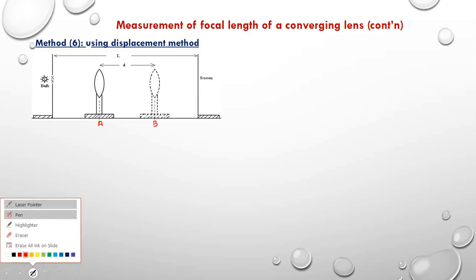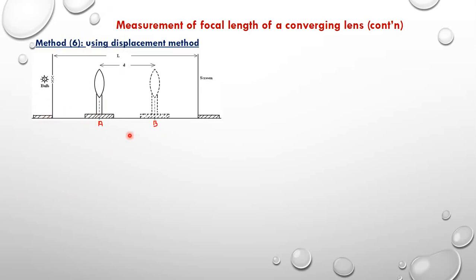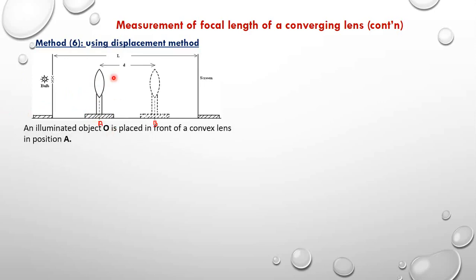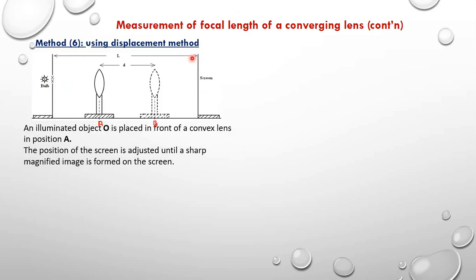We are going to place the illuminated object at a certain distance away from the convex lens at position A. We shall place the illuminated object at a certain position away from the converging lens at position A. Then we adjust until when a sharp image of the cross wire is formed on the screen. The distance from the object up to the screen is going to be noted — that distance L is going to be recorded.